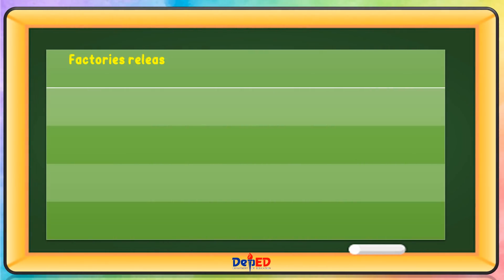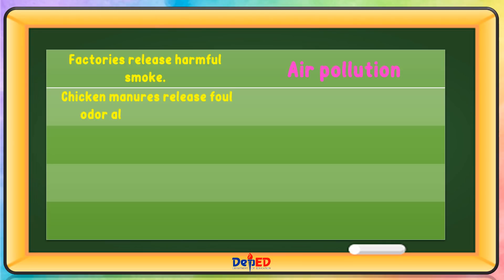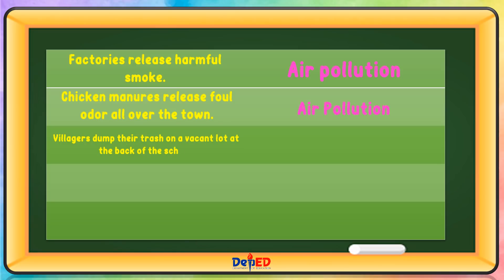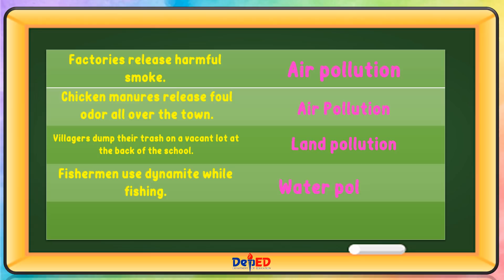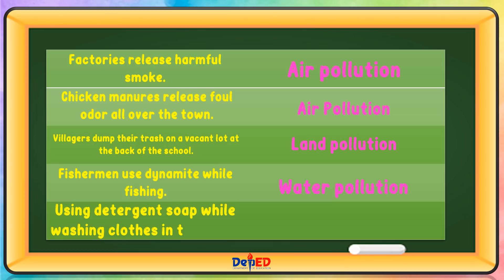Factories release harmful smoke — air pollution. Chicken manure releases foul odor all over the town — air pollution. Villagers dump their trash on a vacant lot at the back of the school — land pollution. Fishermen use dynamite while fishing — water pollution. Using detergent soap while washing clothes in the river — water pollution.